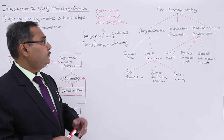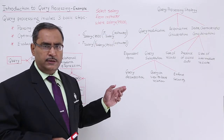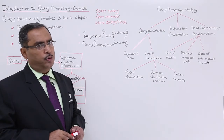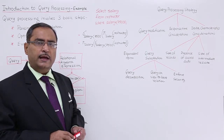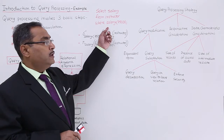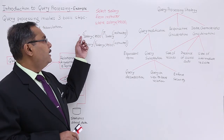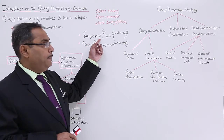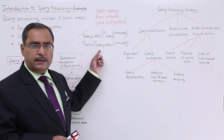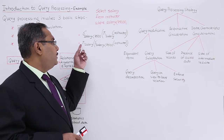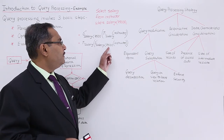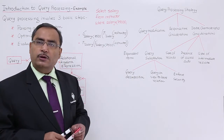So in that case, what will happen? We know that this query will be parsed first — it will check whether it is grammatically correct or not, and then the respective relational algebraic form will be produced. This is the first relational algebraic form: σ(salary < 75,000) followed by π(salary) operating on instructor. The other version of the same expression is where π(salary) comes outside and internally σ(salary < 75,000) operates on instructor.